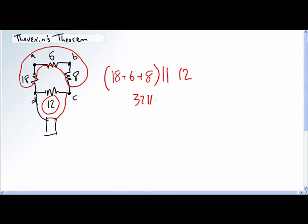So it's 32 in parallel with the 12, so it's 32 times 12 divided by 32 plus 12.